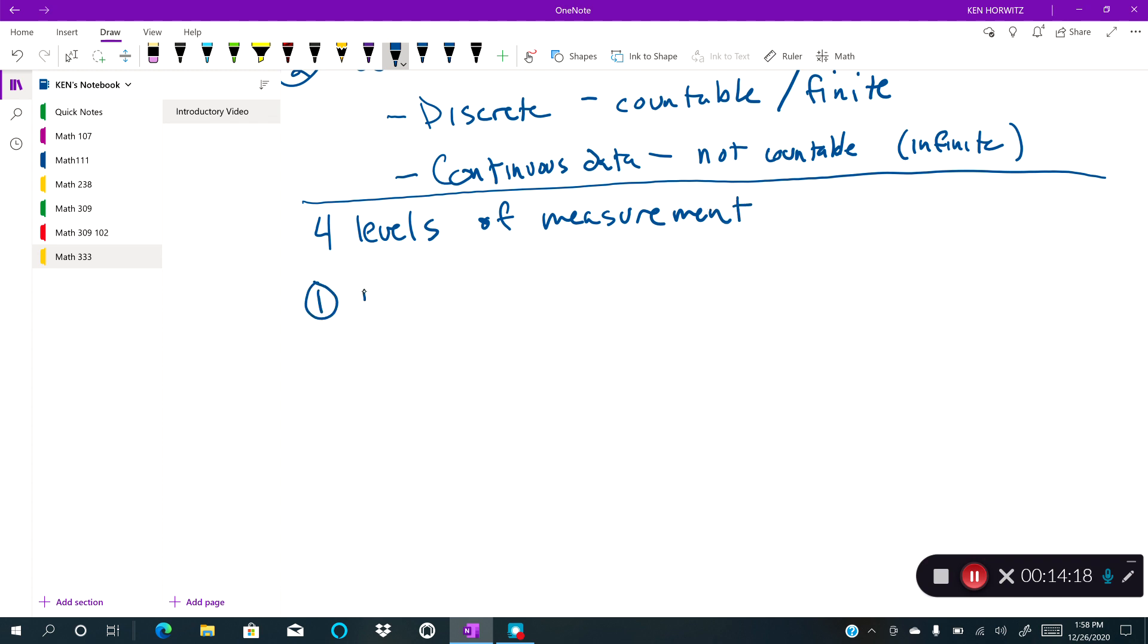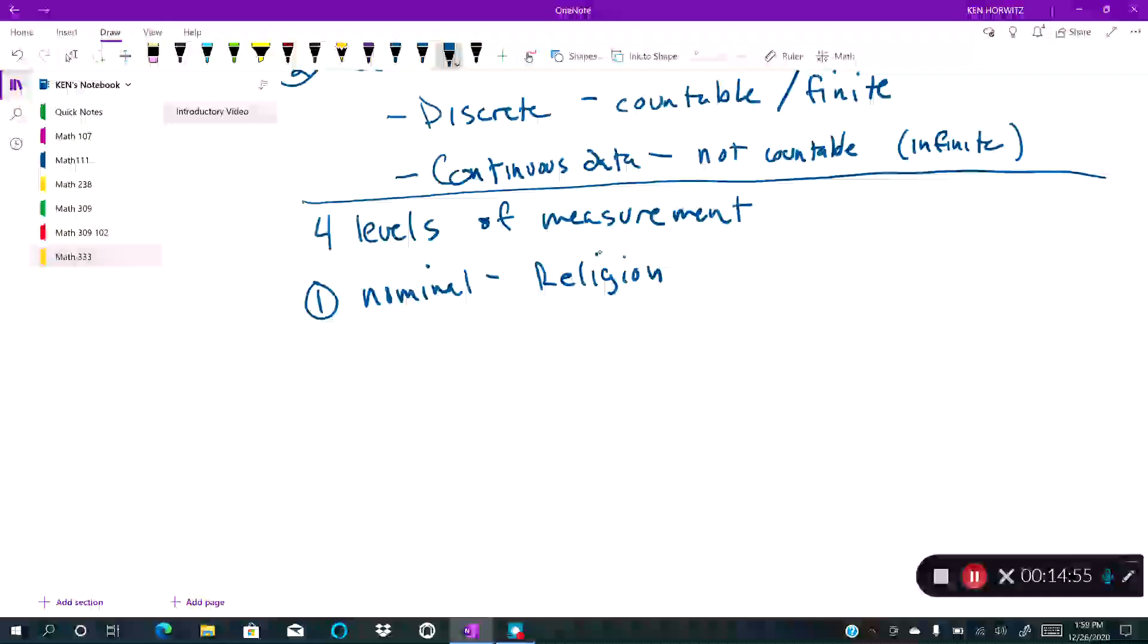And the first is nominal. And that is categories by name only, not ordered. So for example, religion. You would list your categories as Jewish, Catholic, Protestant, you know, that kind of a thing. And whatever religion you put first, there's not necessarily a preference there. It's just you're ordering these by name. So there's no specific order.